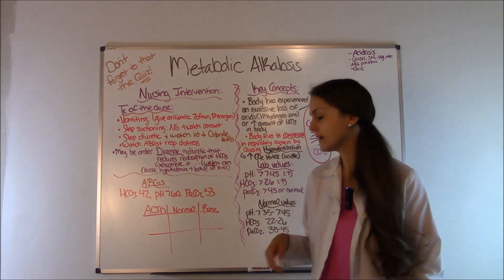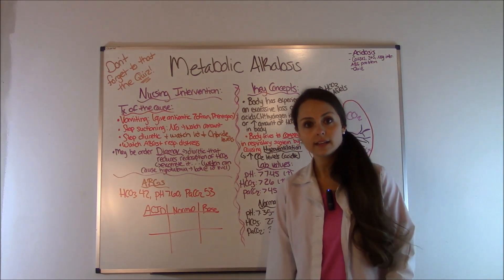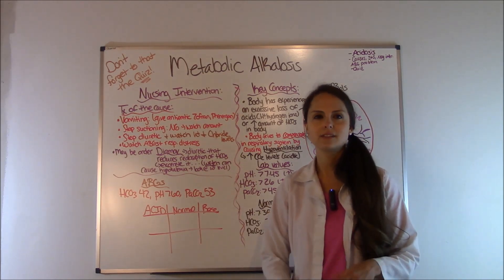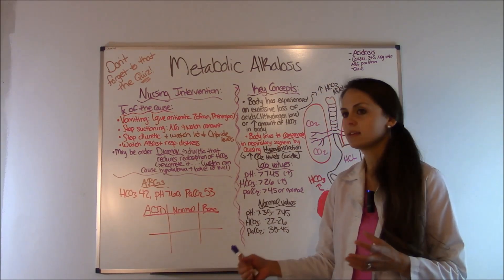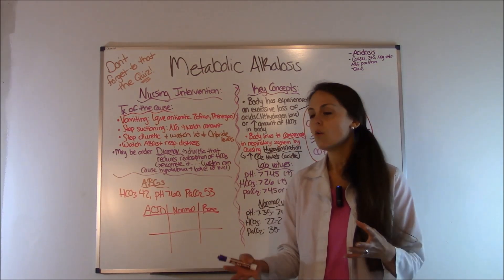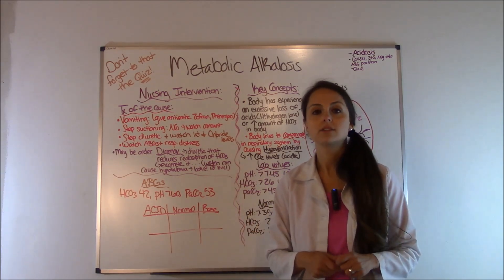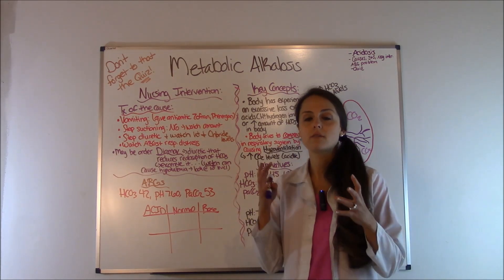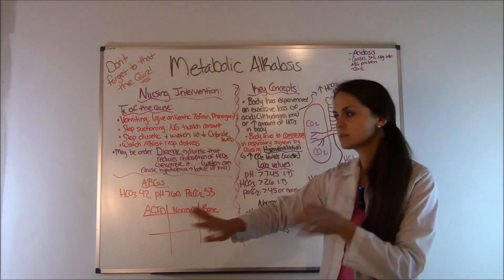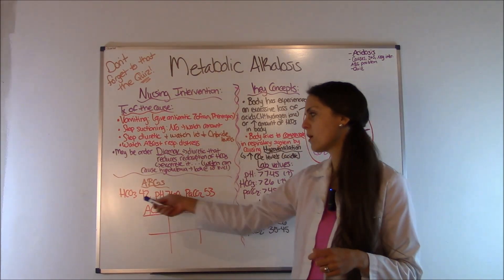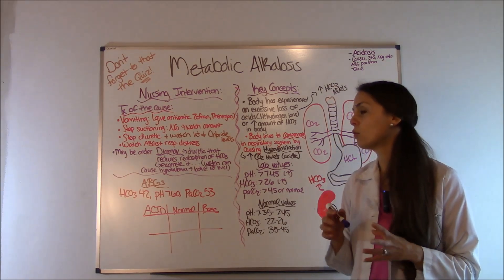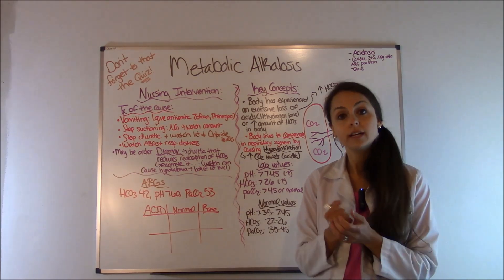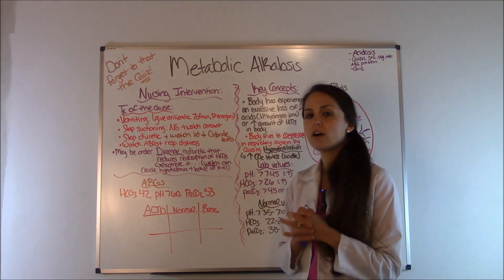Let's work an ABG problem you may encounter on the NCLEX or nursing lecture exams. I use the tic-tac-toe method — I have a video on that in the description. Here are the values: HCO3 is 42, pH is 7.6, and PaCO2 is 53. Normal bicarb is 22 to 26, so 42 is basic — we place HCO3 under base. Normal pH is 7.35 to 7.45, and 7.6 is greater than 7.45, so the pH is alkalotic. We have a tic-tac-toe.